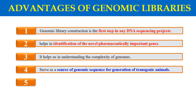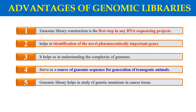The next advantage is that a genomic library generally acts as a source of genomic DNA if you want to make transgenic animals. Transgenic animals are those animals which contain foreign genes, and you can use the genomic library as a source of genomic sequence for the generation of transgenic animals. Another advantage is that genomic libraries can help in the study of different diseases — for example, you can study genetic mutations in cancer tissue. So similarly, you can use genomic libraries in the study of various genetic diseases and genetic mutations.